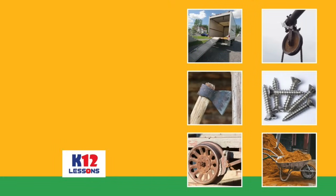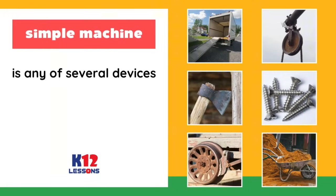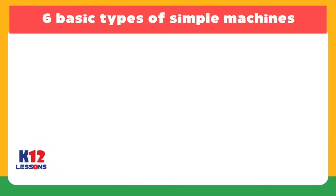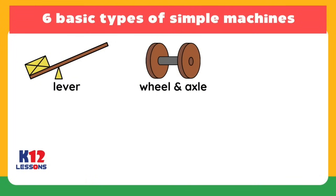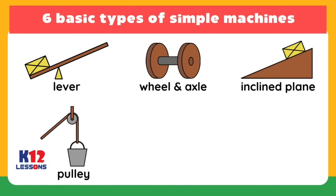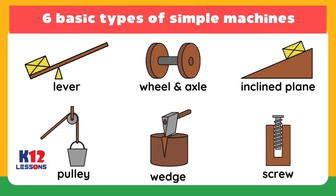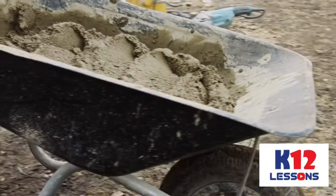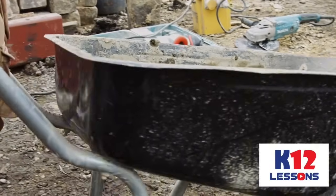In the field of physics, a simple machine is any of several devices with no moving parts that are used to modify motion and force in order to perform work. There are six basic types of simple machines: lever, wheel and axle, inclined plane, pulley, wedge, and screw. Simple machines help people do their work easier and faster. They multiply force and speed and change the direction of the force applied.